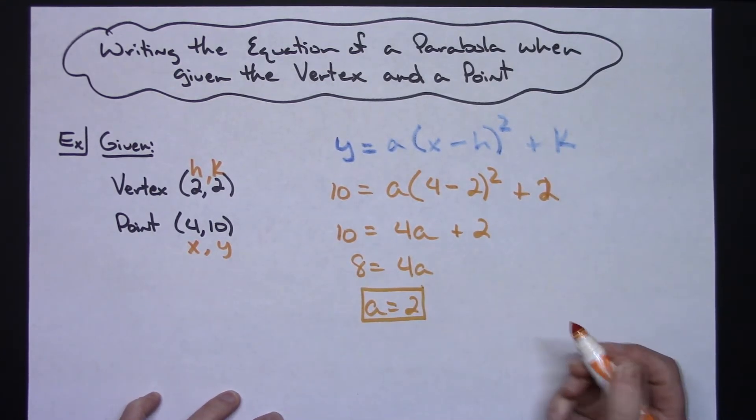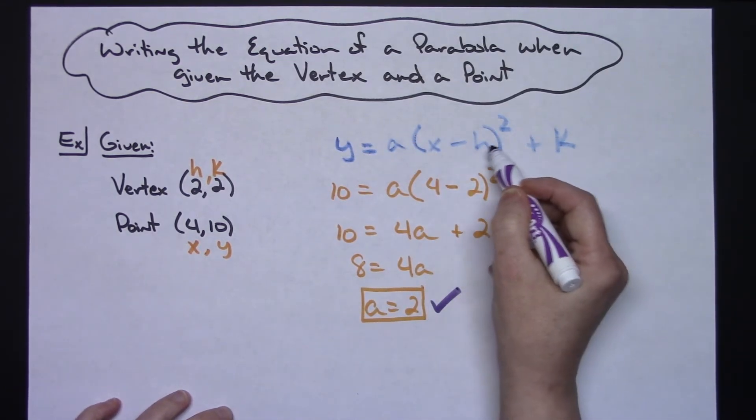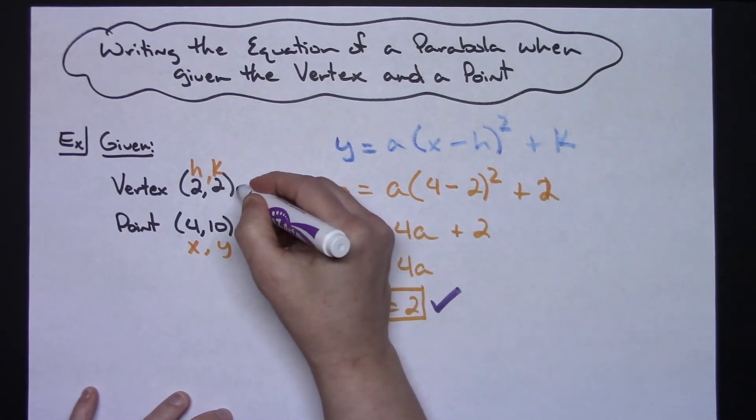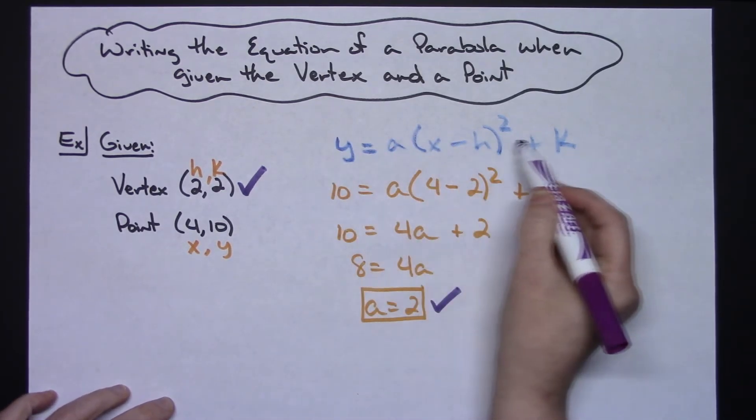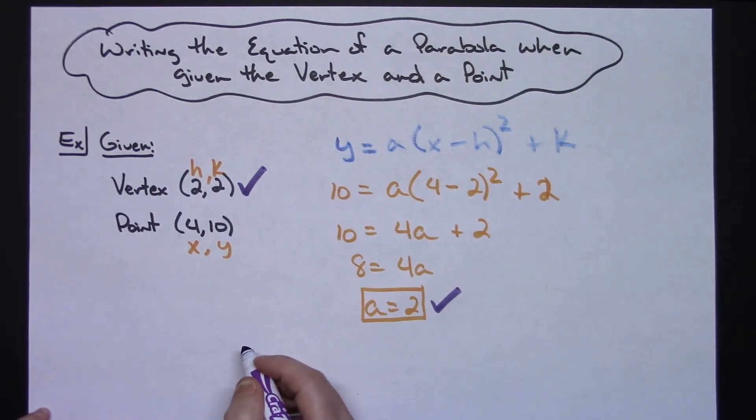Now I know that the a leading coefficient is 2 and I know my h,k which is my center which is the (2, 2), and I can use those two pieces of information and write the equation of this parabola in vertex form.